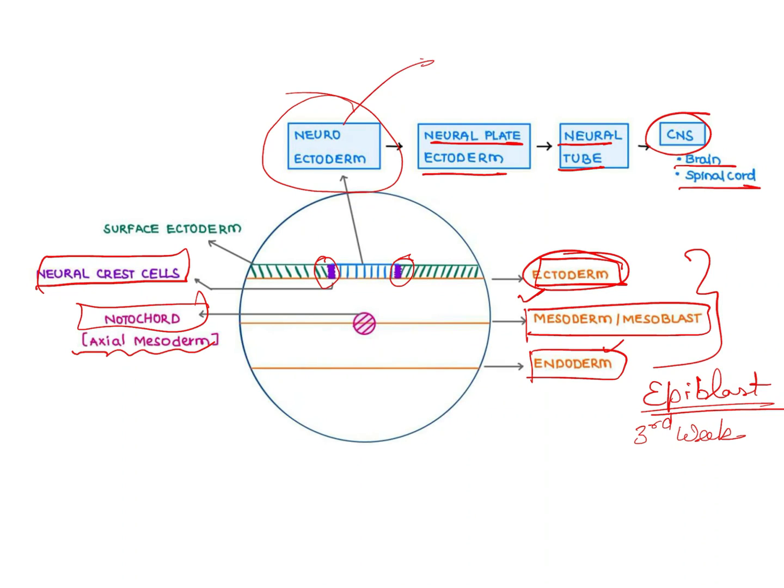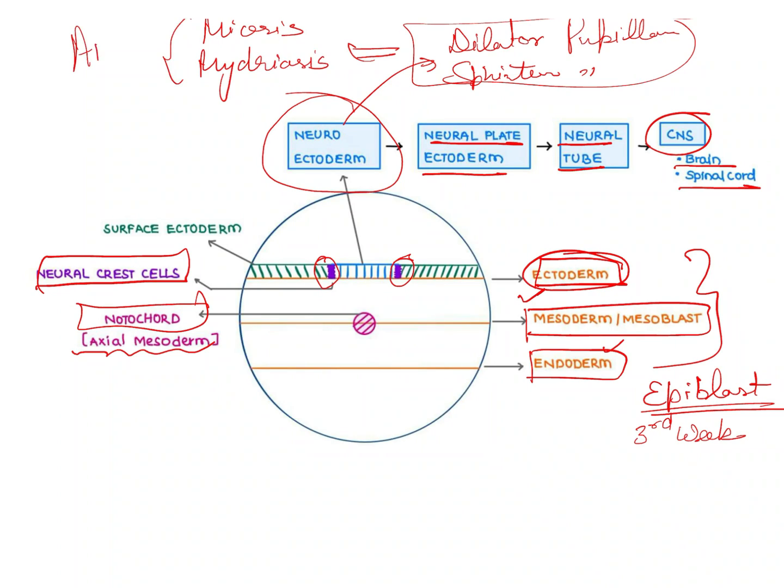The neuroectoderm also gives rise to very important muscles of the eyes known as the dilator pupillae and sphincter pupillae. These muscles are responsible for miosis and mydriasis, and these are under the control of the autonomic nervous system. This is very important to understand.